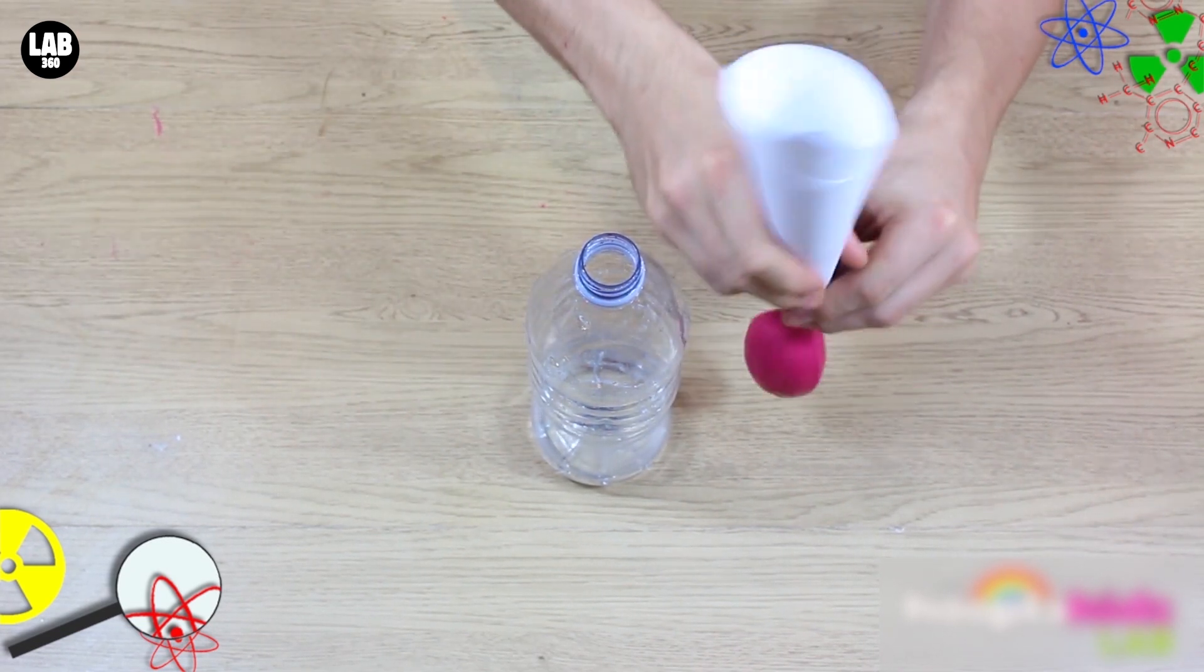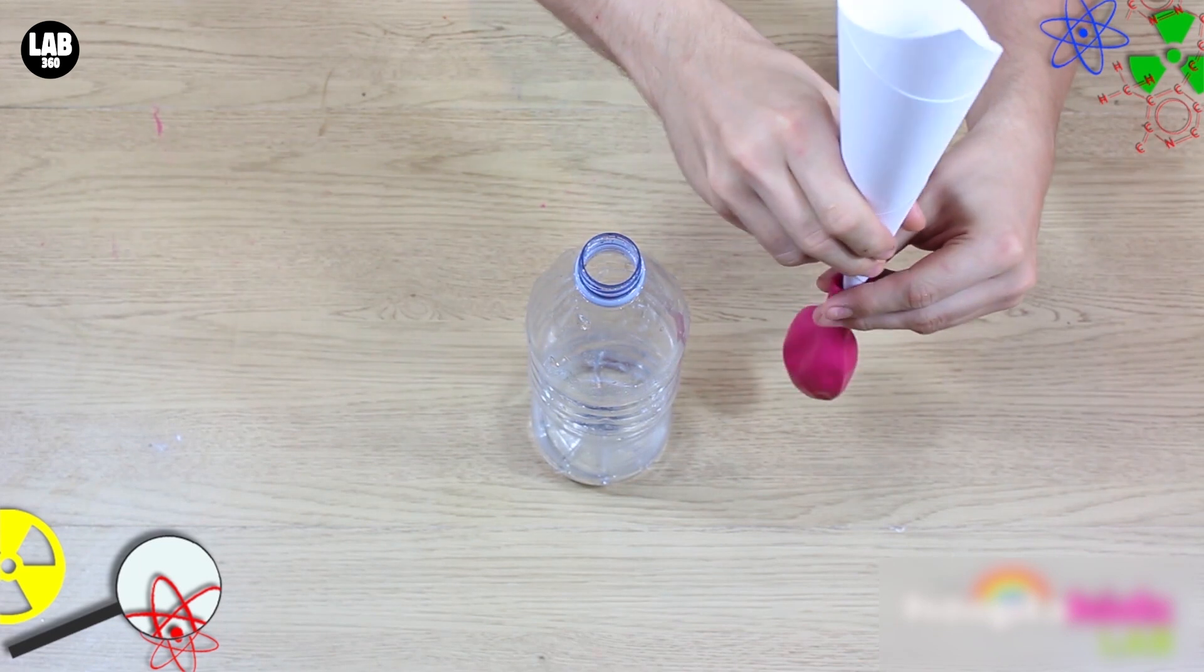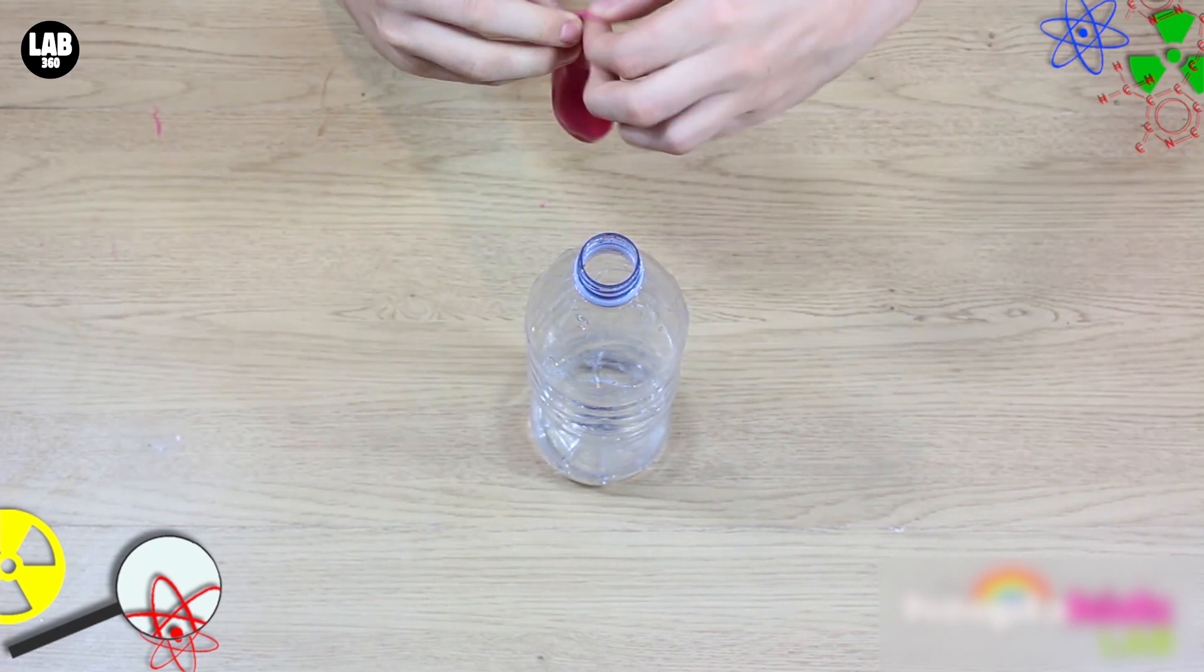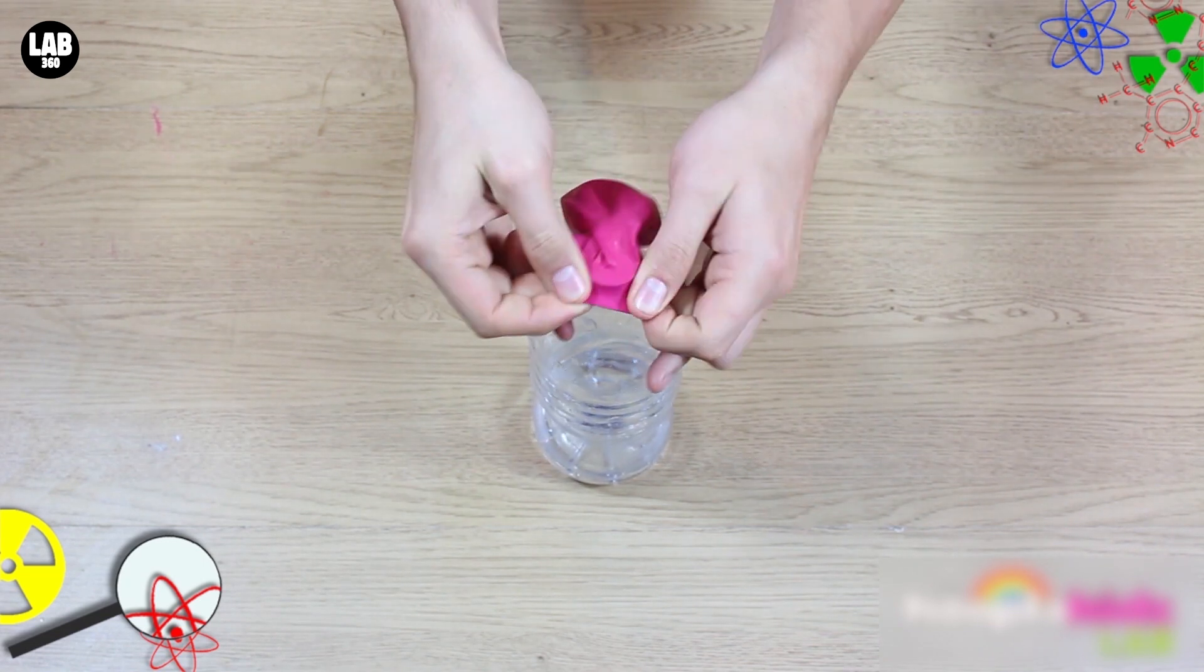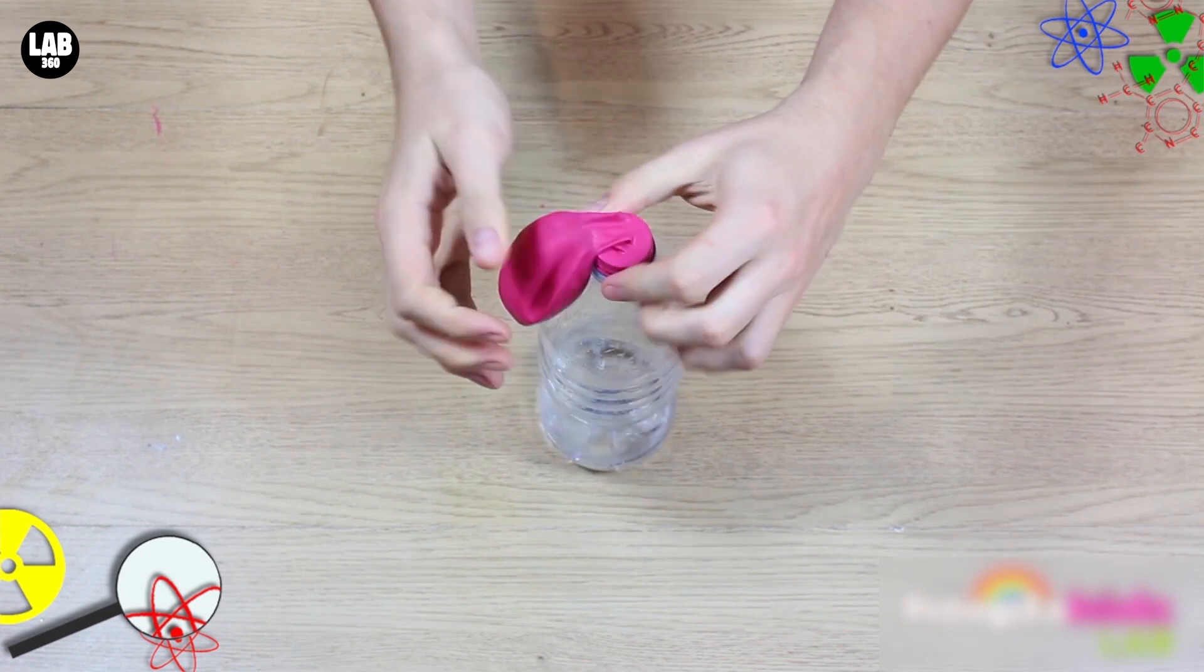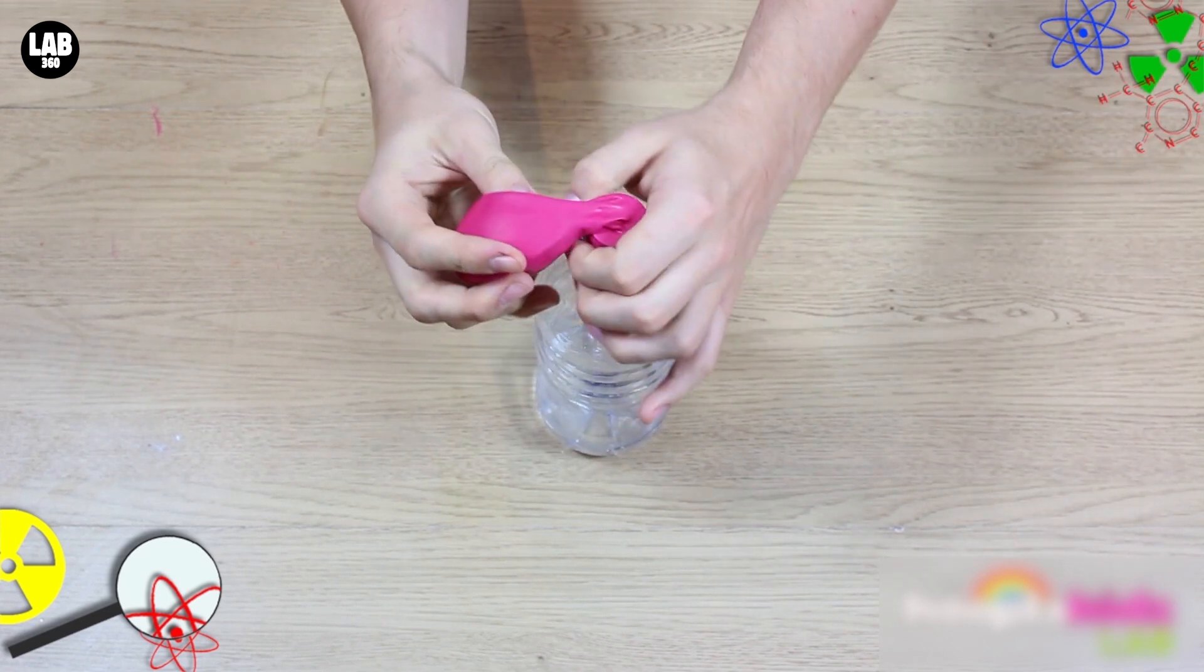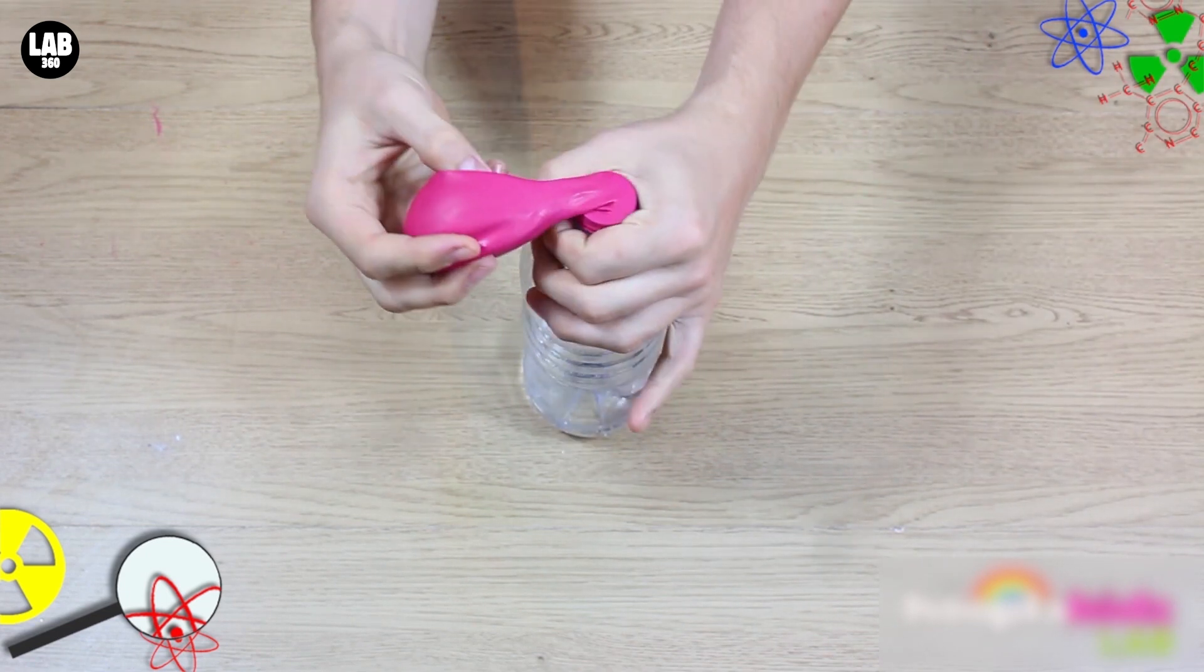Then, very carefully, remove the cone from the top of the balloon, and stretch the neck over the top of the bottle. Make sure you're very careful when you do this.